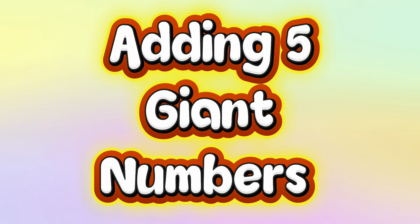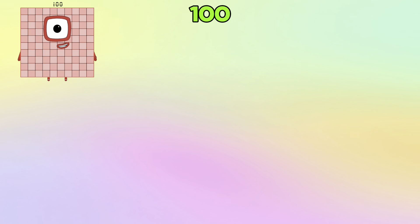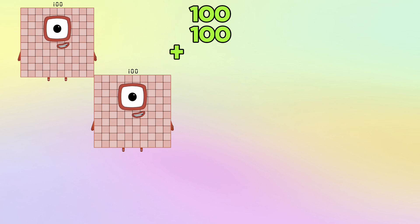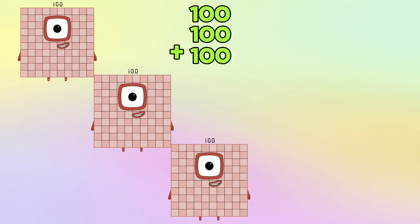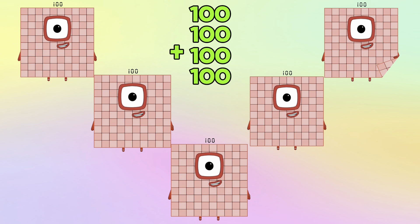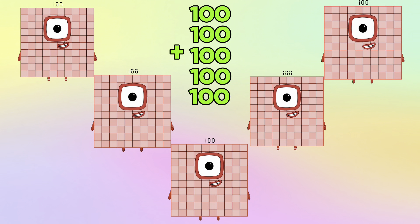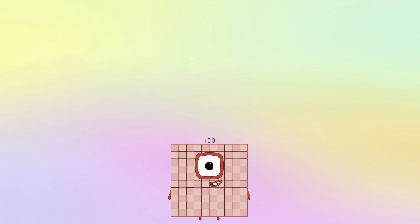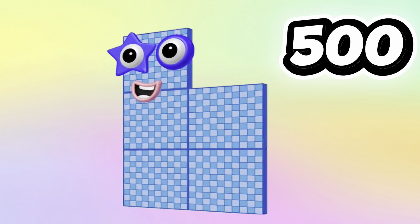Adding 5 giant numbers. Let's begin. 100 plus 100 plus 100 plus 100 plus another 100 is equals to 500.